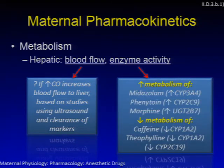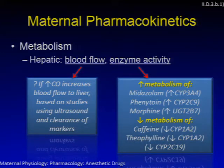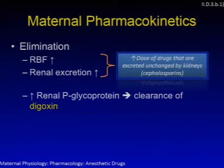Some CYP450 and UGT enzymes are increased and some are decreased during pregnancy. Midazolam, phenytoin, and morphine are associated with increased metabolism due to up-regulation of specific CYP and UGT enzymes, whereas caffeine and theophylline are associated with decreased metabolism due to CYP down-regulation. Renal blood flow and excretion are increased, so we may need to increase doses of drugs excreted unchanged by the kidney — for example, cephalosporins. There is also an increase in renal P-glycoprotein, which increases clearance of drugs like digoxin.